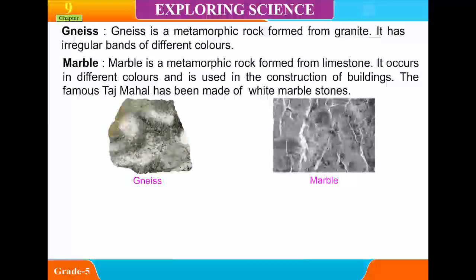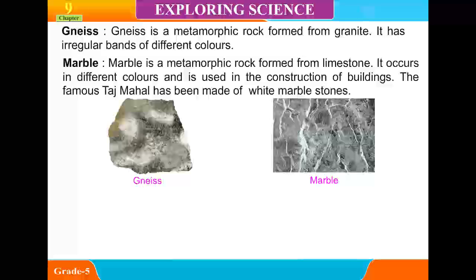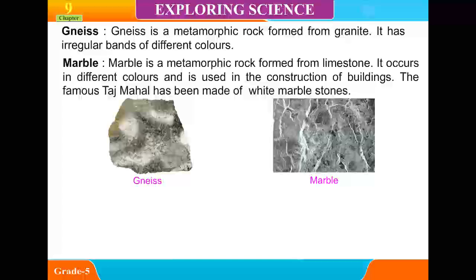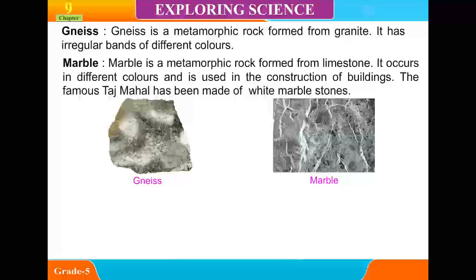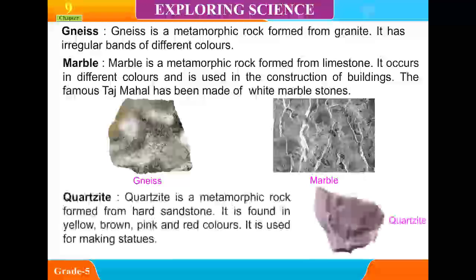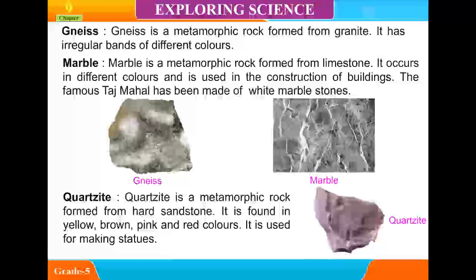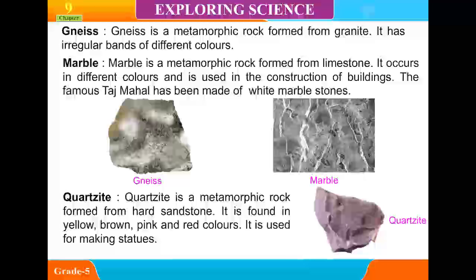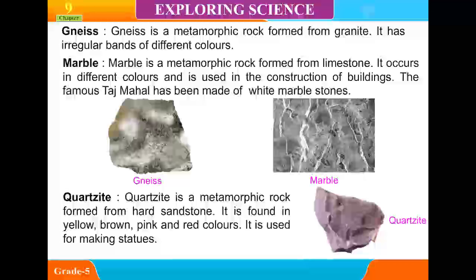Marble. Marble is a metamorphic rock formed from limestone. It occurs in different colors and is used in the construction of buildings. The famous Taj Mahal has been made up of white marble stones. Quartzite. Quartzite is a metamorphic rock formed from a hard stone. It is found in yellow, brown, pink and red colors. It is used for making statues.